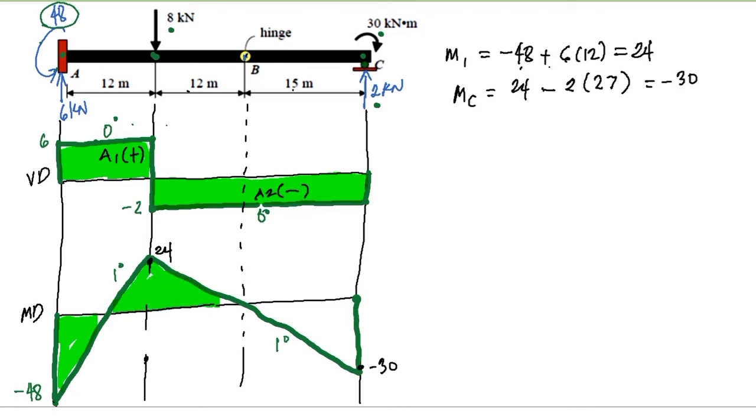We can confirm this. For the maximum shear, the answer is 6 kilonewton. For maximum negative moment, the answer is negative 48 kilonewton meter. For maximum positive moment, the answer is 24 kilonewton meter.